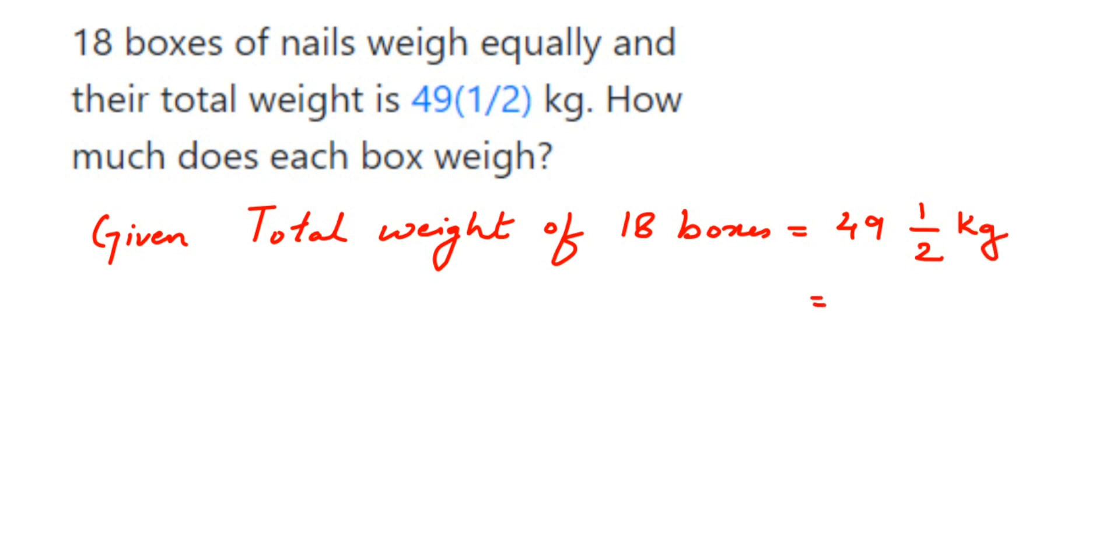Multiply these two numbers: 2 into 49, and then whatever answer we get, we have to add with this. So 2 into 49 is 98. First multiply: 98 plus 1 is 99. So we'll get here 99/2. So this is equal to 99/2 kg.